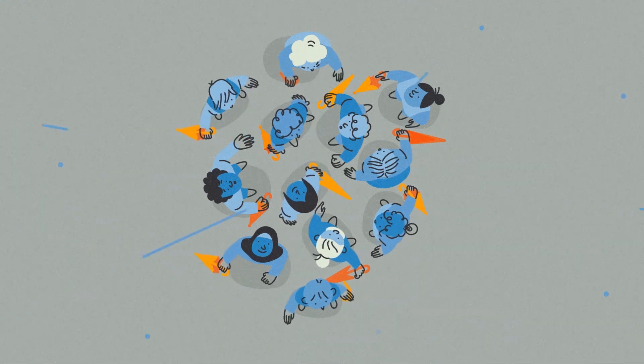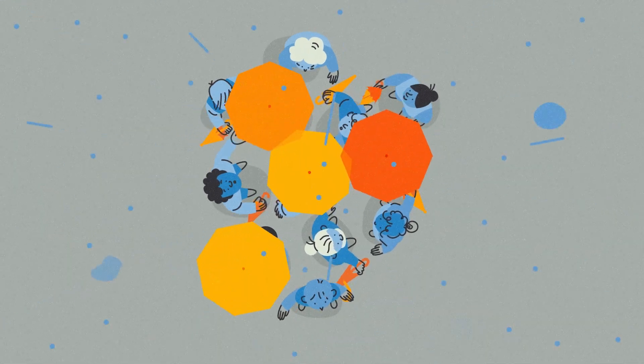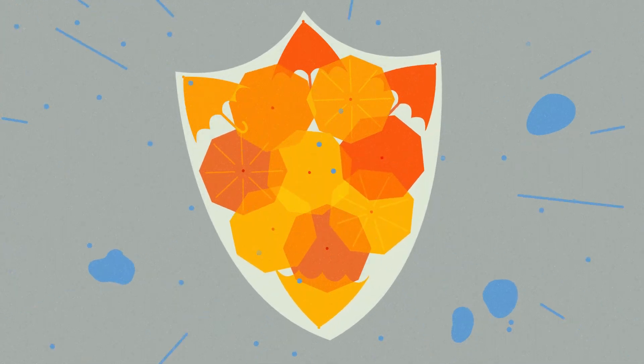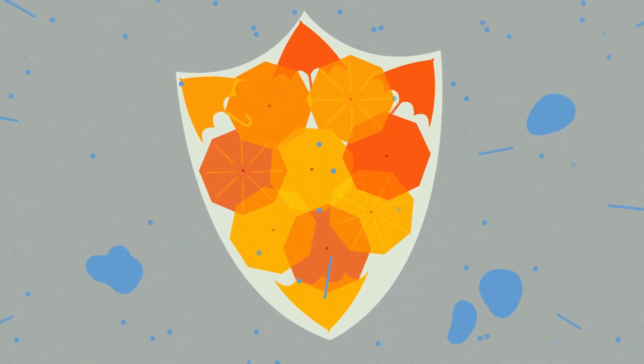When the rain begins to pour, umbrellas go up. In a group, this creates a lovely shield, meaning that the majority of individuals stay warm and dry.